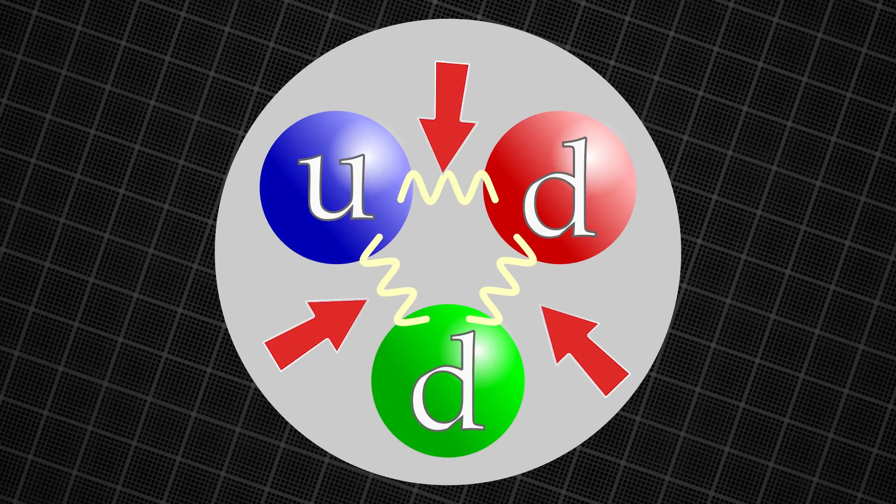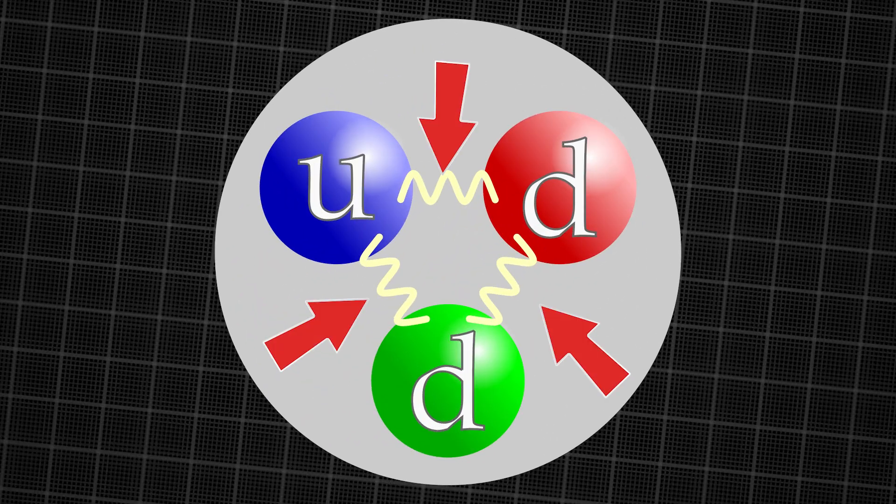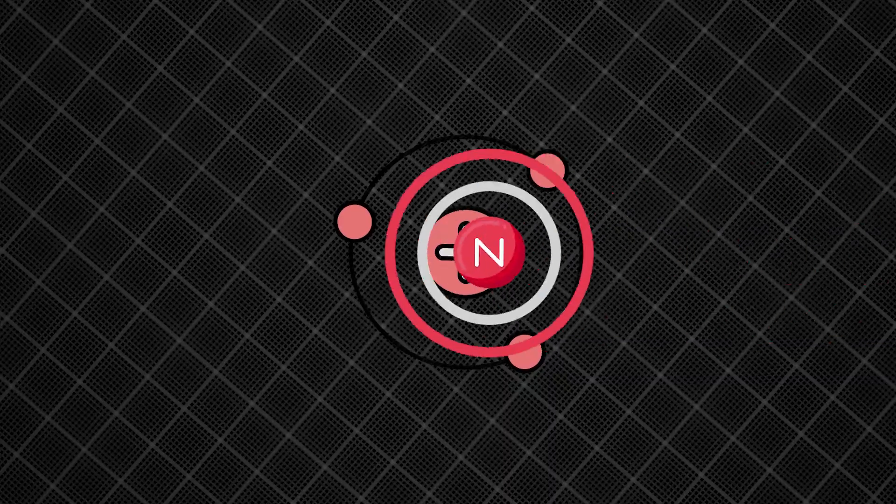These quarks were held together by particles called gluons, which act as a glue that sticks the protons and neutrons together. As the universe cooled, protons and neutrons began to combine.